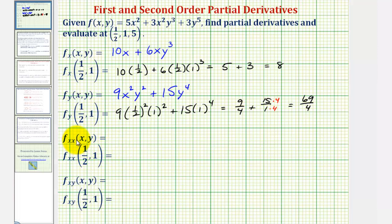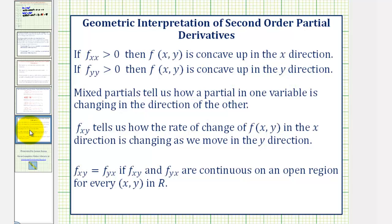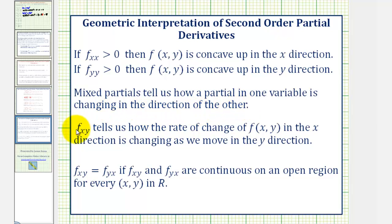Now let's review what the second-order partial derivatives tell us about our surface and how to find them. If the second-order partial with respect to x is positive, then our function is concave up in the x direction. If the second-order partial with respect to y is positive, then the function is concave up in the y direction. If these are negative, the function would be concave down in those directions. The mixed partials tell us how a partial in one variable is changing in the direction of the other — specifically, how fast the rate of change of f in the x direction is changing as we move in the y direction, or equivalently, how the slope of the tangent line in the x direction changes as we move in the y direction. The mixed partials are equal if both are continuous on an open region for every point in that region.